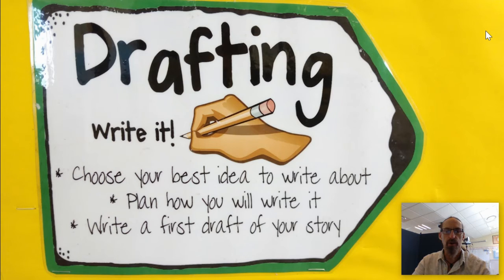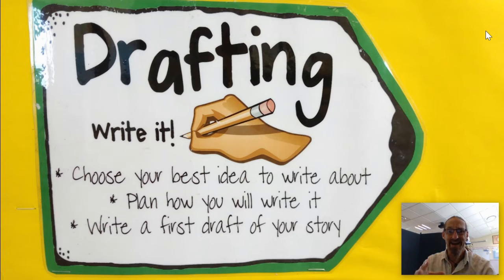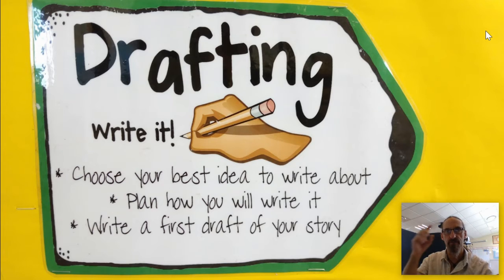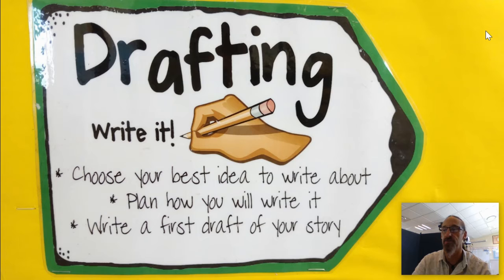Once you've got an idea and decided what you're going to do, it's time to draft. Just write — go ahead and write. Choose the best idea to write about, plan how you'll write it, and write the first draft. Drafting is just getting your ideas down on paper. It'll end up being maybe a mess where you've got arrows, or you write something on another page and want to cut it out and stick it in, or draw an arrow to show where a section goes. This is your draft — it can be very messy, but it's getting all your ideas down on paper.